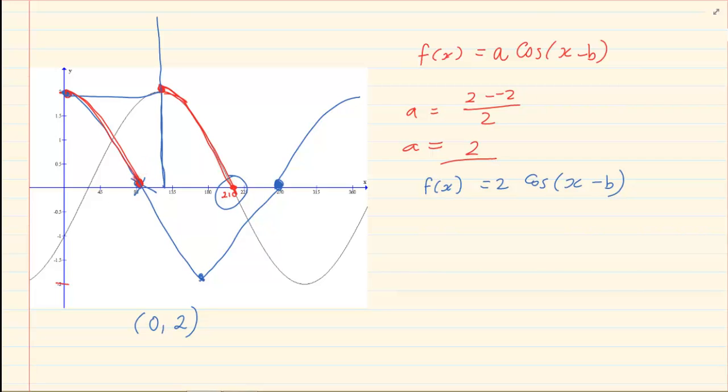So now we know the point it should have crossed was 90. Now it's crossing 210. So what was the difference between these two points? The difference between those two points was 120 degrees. That would mean our b is equal to 120 degrees. So our equation would be f of x is equal to 2 cos x minus 120 degrees.